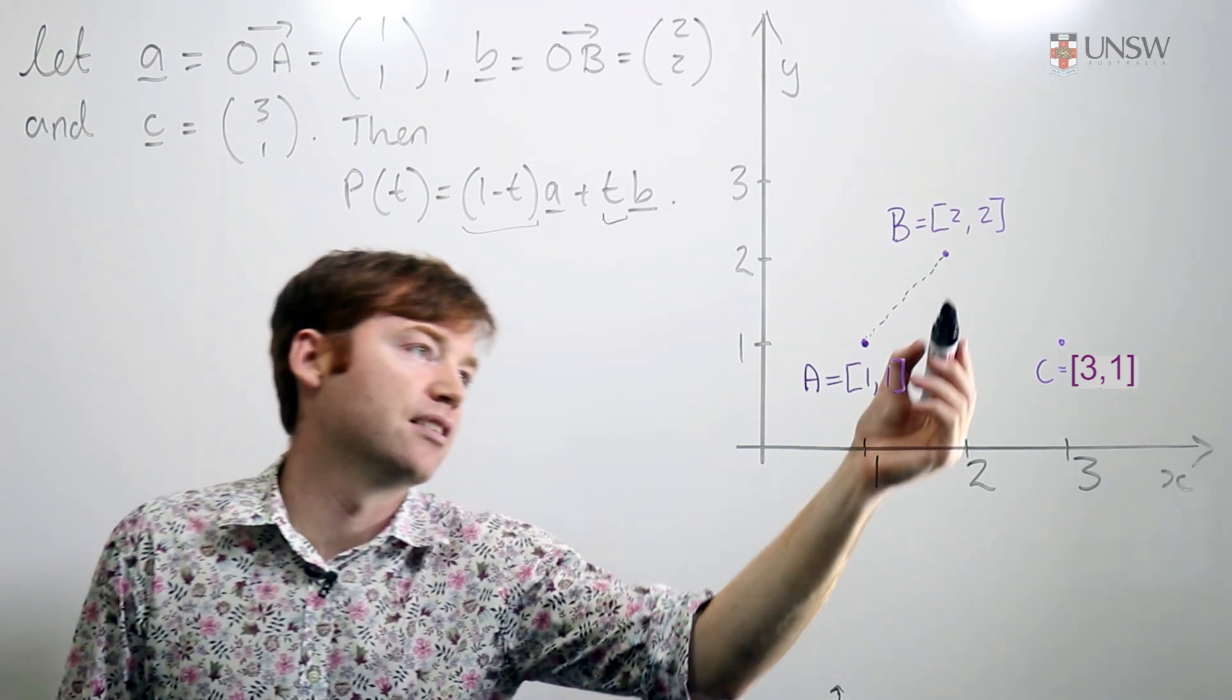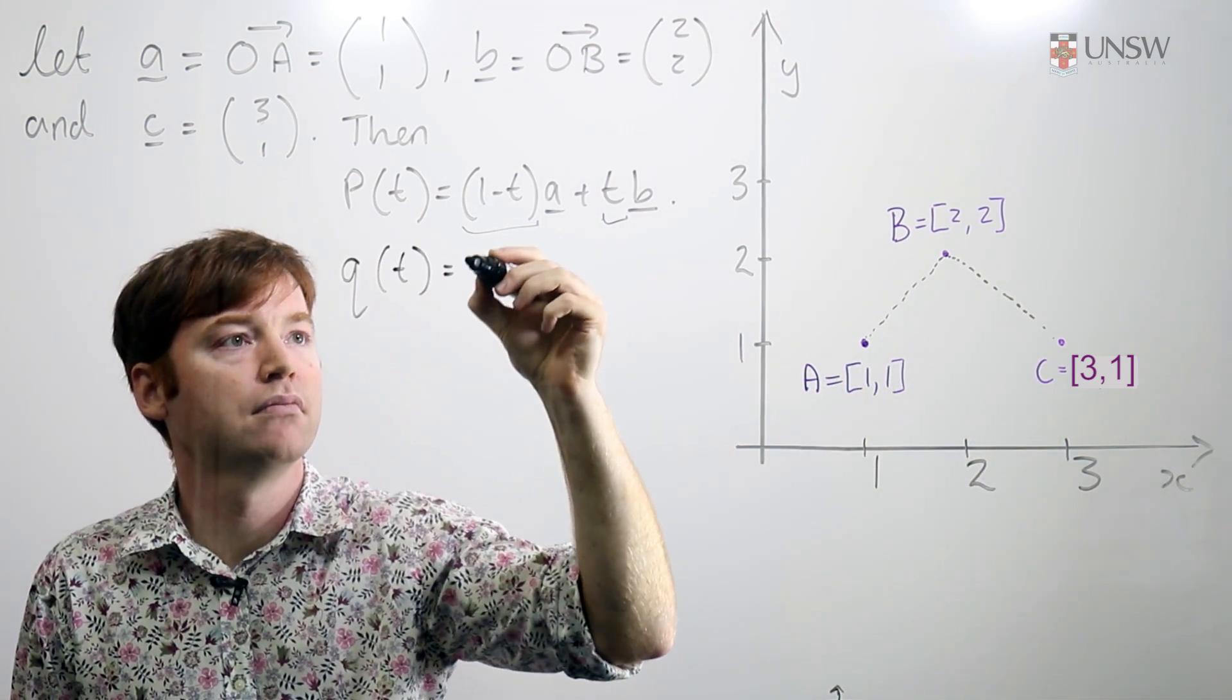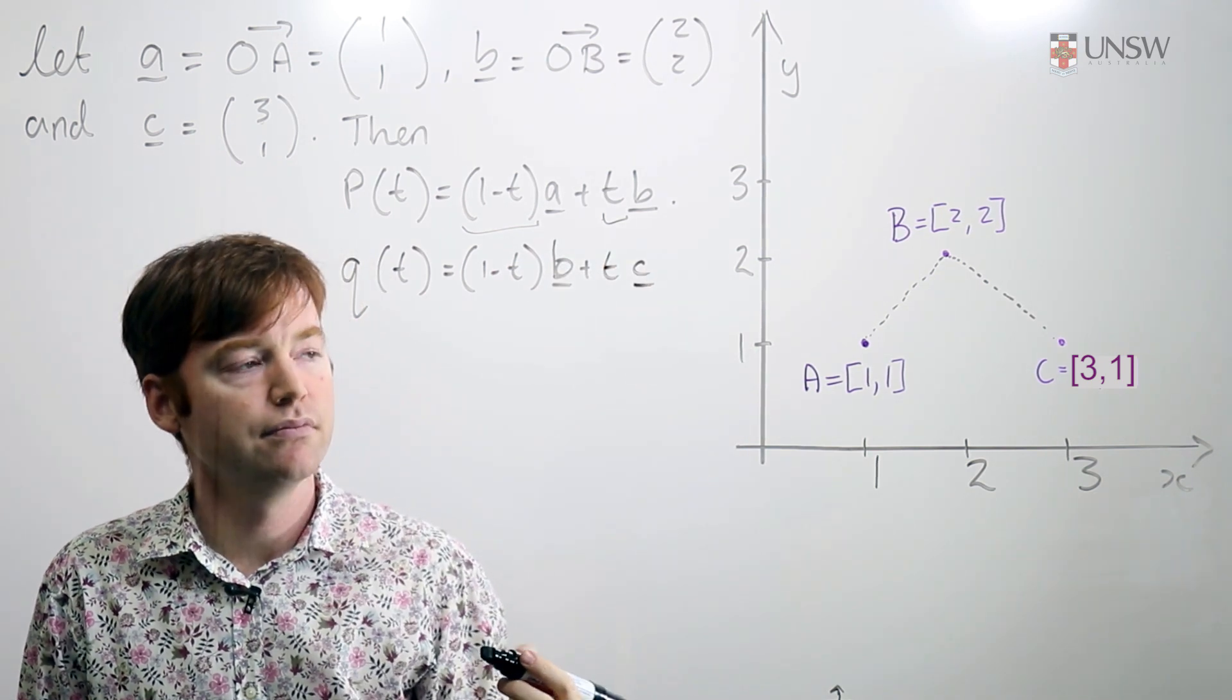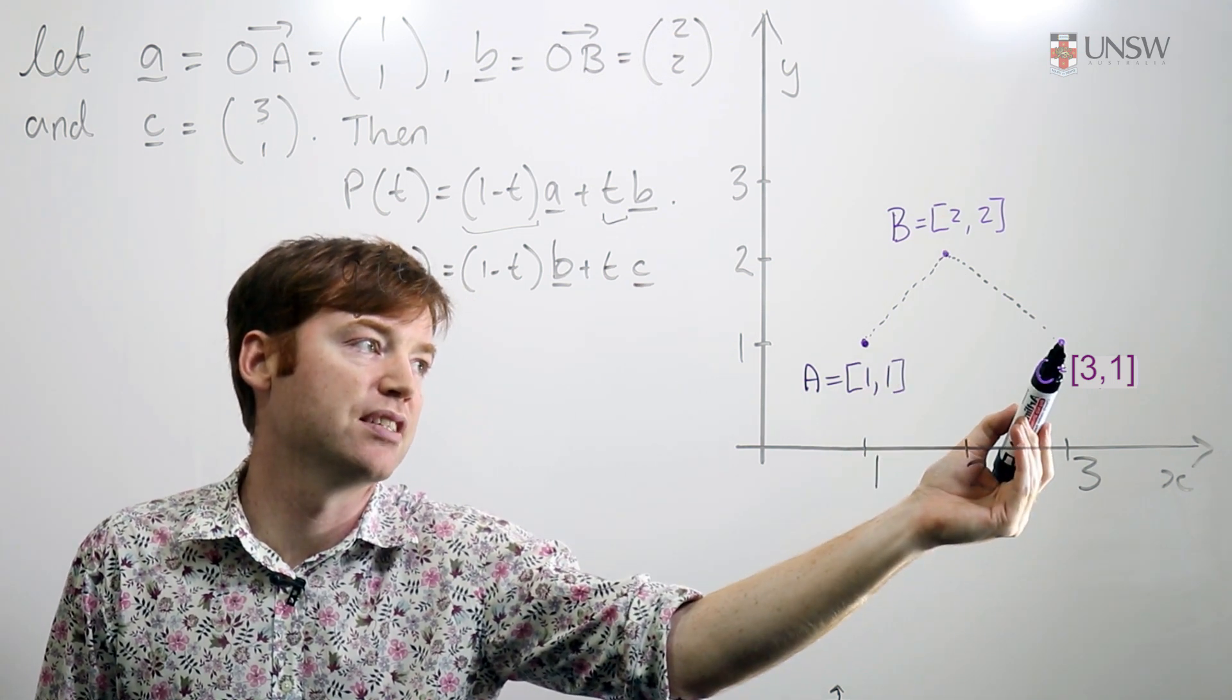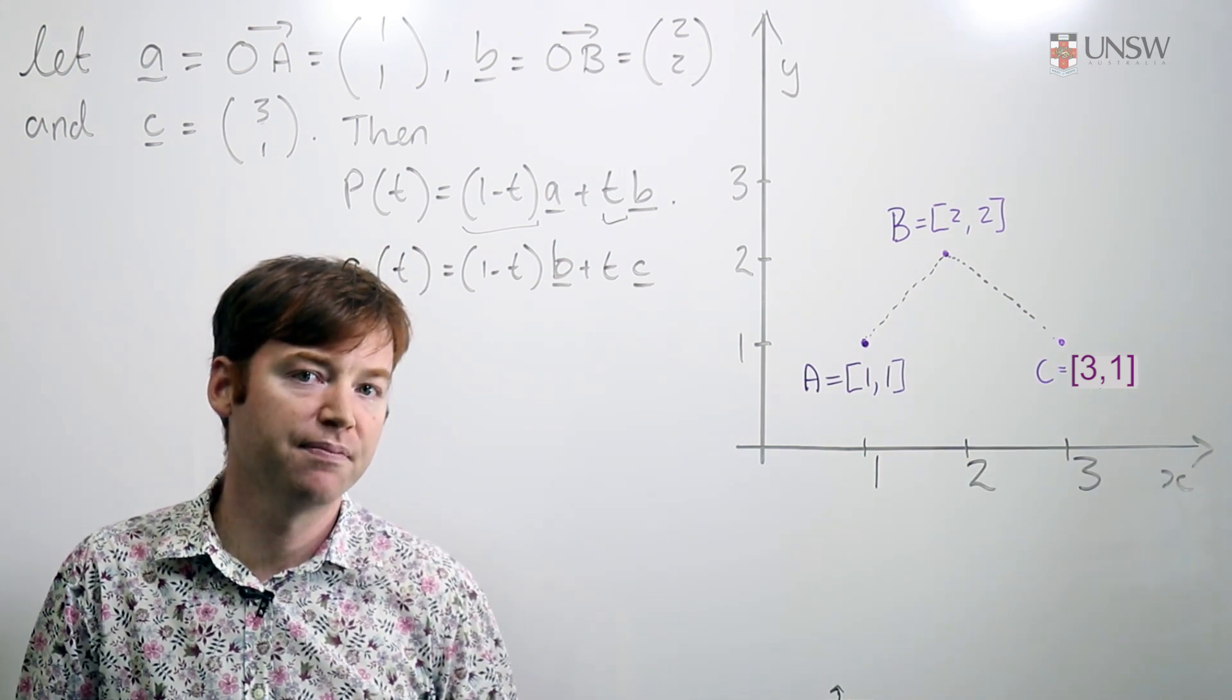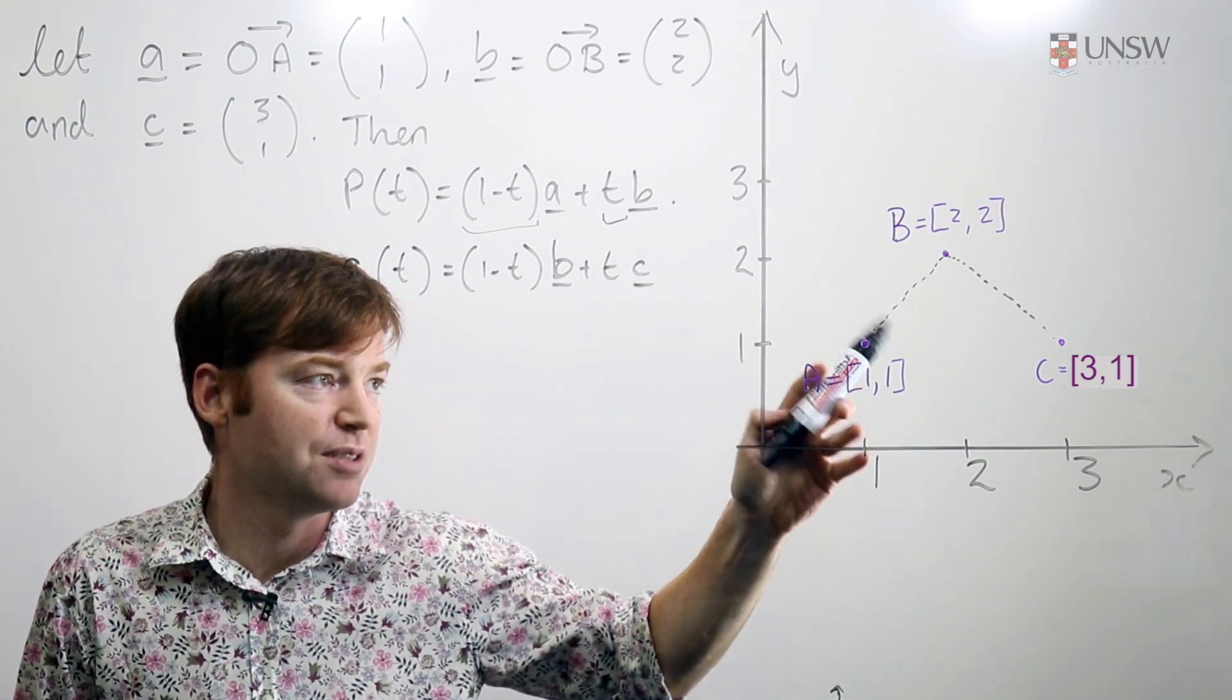I can similarly define the line from b to c. So this gives me a new line. Initially all the weight is at b when t is equal to 0, and when t is equal to 1 all the weight is at c. You can also think about this as time. And time is only going to go from 0 to 1, and time moves uniformly as we expect it to.